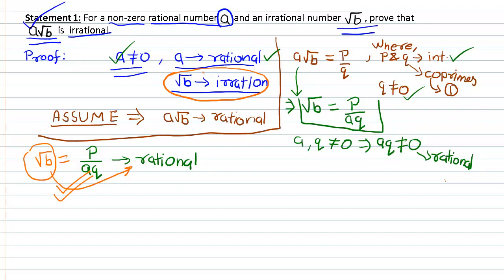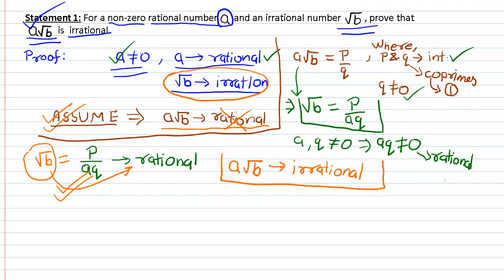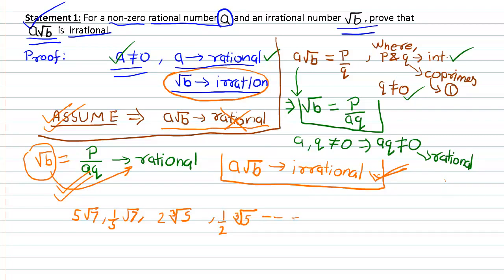However, this contradicts the fact that √b is irrational. This contradiction is a result of our assumption that a × √b is rational. Therefore, through contradiction, we have proved that a × √b is irrational. Similarly, we can easily prove that numbers like 5√7, (1/5)√7, 2∛5, and (1/2)∛5 are also irrational.